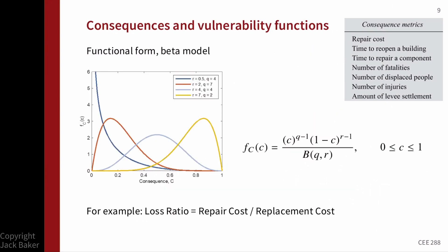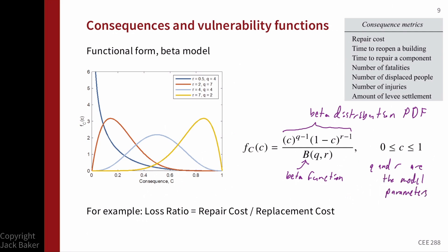Another way to specify consequences is with a beta distribution — sometimes called a beta model. The beta distribution PDF has model coefficients q and r, plus a beta function in the denominator that normalizes the distribution so the area underneath equals one. The beta distribution is bounded between zero and one. For different choices of q and r, outcomes can be more likely near one, near zero, or in the middle.